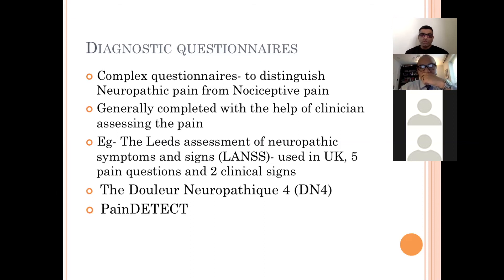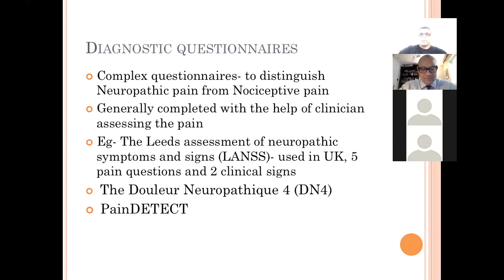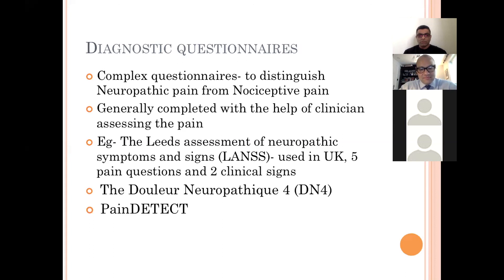Diagnostic questionnaires are complex tools mainly used to distinguish neuropathic pain from nociceptive pain. They are generally completed with the help of a clinician. The most commonly used in the UK is the LANSS questionnaire — Leeds Assessment of Neuropathic Symptoms and Signs — which has five pain-related questions and two clinical signs; a score of 12 or more indicates possible underlying neuropathic pain. In France, the DN4 questionnaire is used, and PainDETECT is commonly used in Germany.